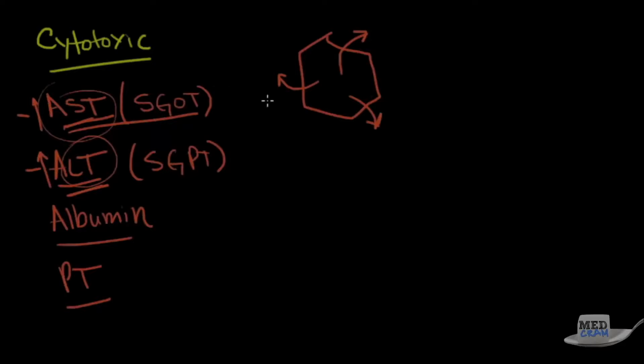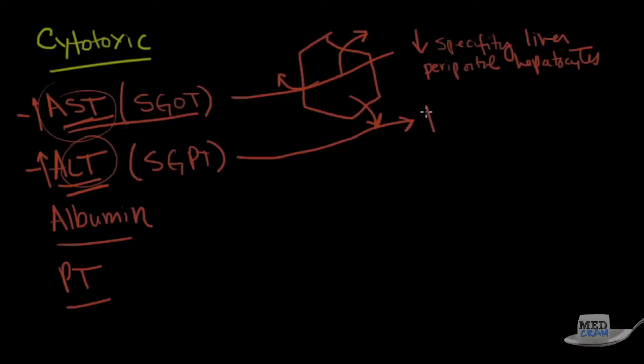So the AST specifically has low specificity for the liver. It's seen in the periportal hepatocytes, whereas the ALT has a high specificity for the liver. So think of the L here and the ALT as being standing for liver, whereas S is more for muscle, but they're both seen in the liver.